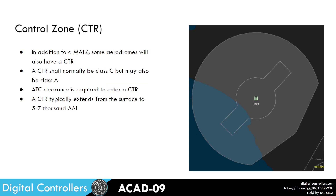One layer above the MATs we have the control zone, abbreviated to CTR. A CTR is typically going to be class Charlie but can also be class Alpha at incredibly busy airports. ATC clearance is required to enter a control zone, and control zones typically extend from the surface to about 5 to 7000 feet above aerodrome level. The specific number is detailed in the DCP15 series.